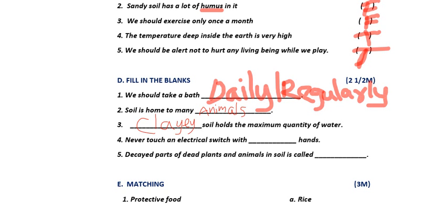Fourth blank: never touch an electrical switch with — blank — hands. We should not touch electrical switches with wet hands. So the answer is wet. Fifth blank: decayed parts of dead plants and animals in soil is called — blank. The answer is humus — H-U-M-U-S. So the fill-in-the-blank answers are: daily or regularly, animals, clay soil, wet, and humus.